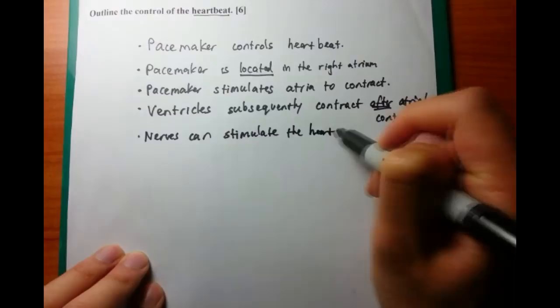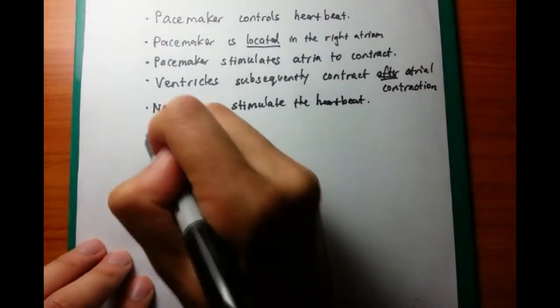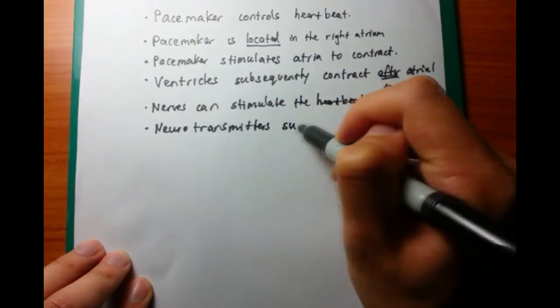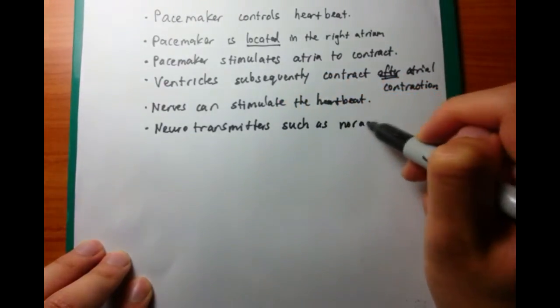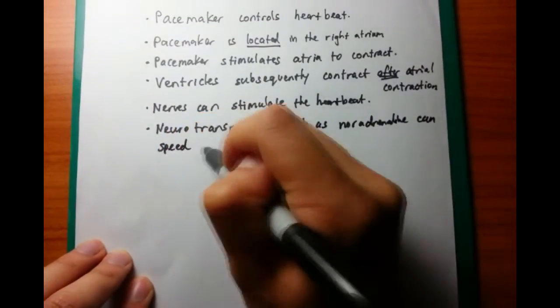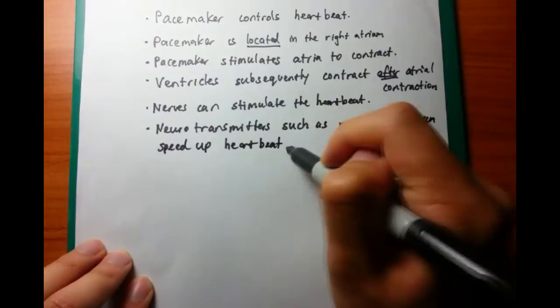You want to give examples of neurotransmitters involved with nerves that can increase the heartbeat and then decrease it. Whenever you think of things that can increase the heartbeat, you think of adrenaline or noradrenaline. Noradrenaline is a key neurotransmitter involved in speeding up the heartbeat.